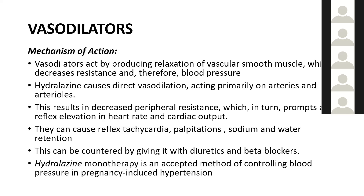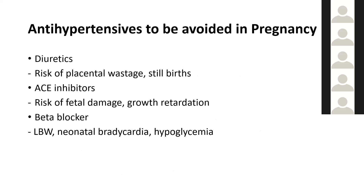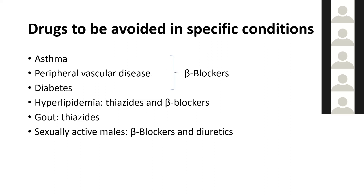Hydralazine monotherapy is an accepted method for controlling pregnancy-induced hypertension and is the first-line drug in that setting. Antihypertensives to avoid in pregnancy include diuretics (risk of placental wastage and stillbirth), ACE inhibitors (risk of fetal damage and growth retardation), and beta blockers (risk of low birth weight and neonatal bradycardia and hypoglycemia). In asthma, peripheral vascular disease, and diabetes, beta blockers should not be given. In hyperlipidemia and gout, thiazides and beta blockers should not be given. In sexually active males, beta blockers and diuretics should be avoided due to sexual dysfunction.